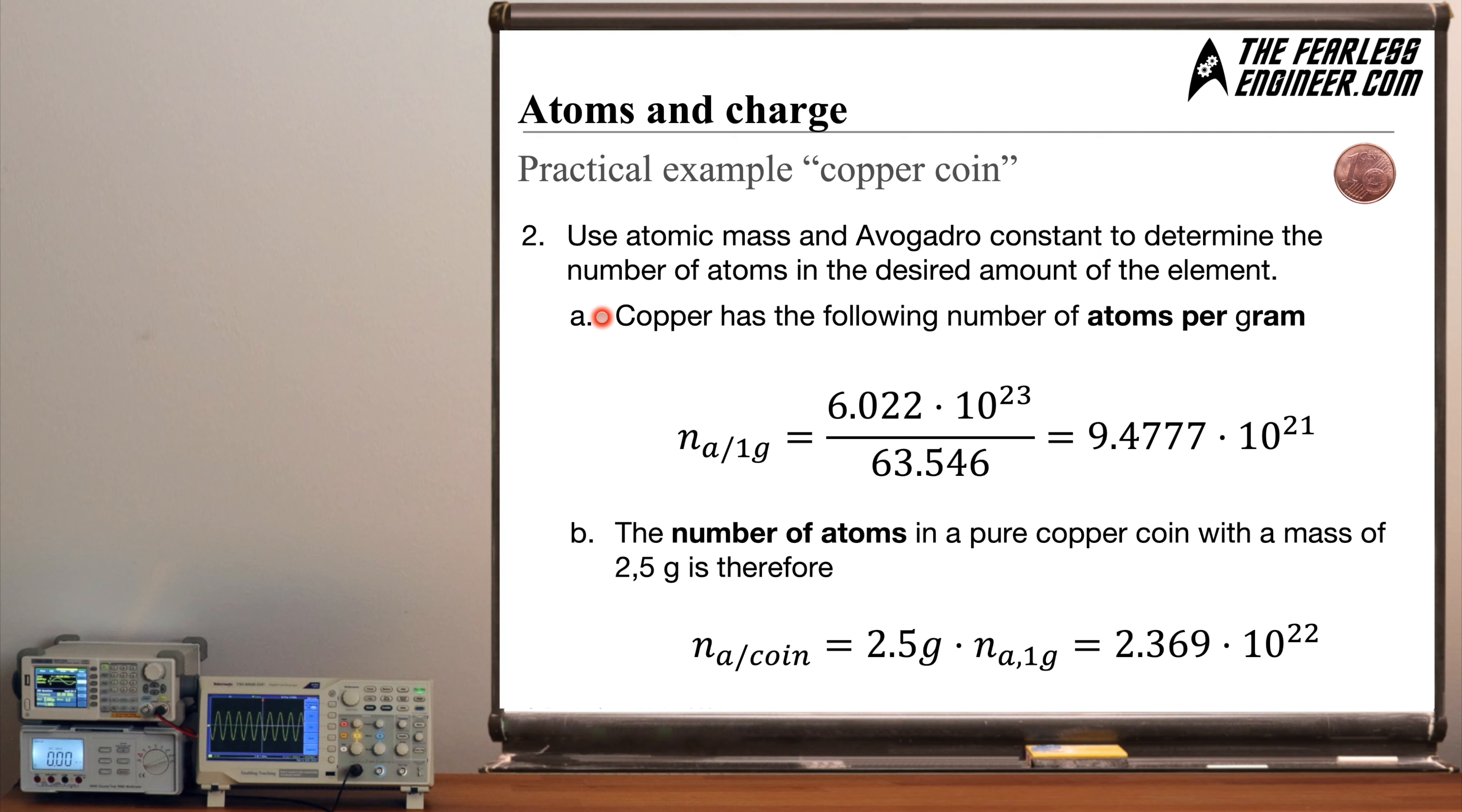And now on the second step we will be using this atomic mass and also Avogadro's constant to determine the number of atoms which exist in the desired amount of the element in our case copper. And in part a we will now be computing the number of atoms per gram the number of copper atoms per gram of copper. And we will abbreviate this by using the variable Na and this means it's referring to one gram of the material. Now this is Avogadro's number. We divide it by the atomic mass and what we get is the number of copper atoms in one gram of copper.